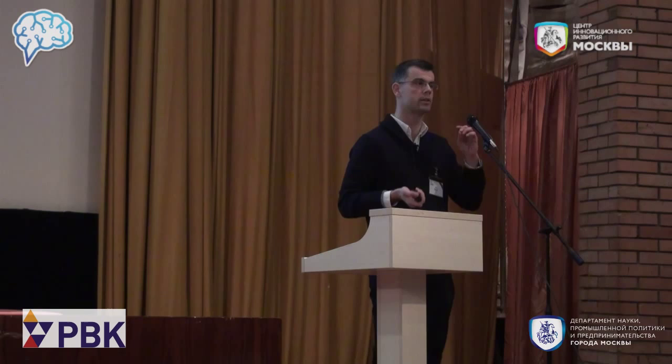The last theory — and the one I want to talk about today — is the stereochemical hypothesis, which in this form was first proposed by Carl Woese, though the idea goes back to Gamow in the 50s. It says that long ago, during the development of the code, there must have been a direct interaction somehow between the amino acids and their cognate codons — a direct physicochemical interaction that was the basis for how the system evolved.